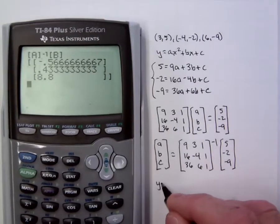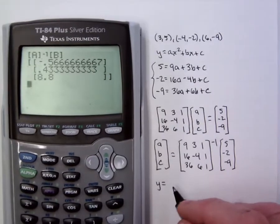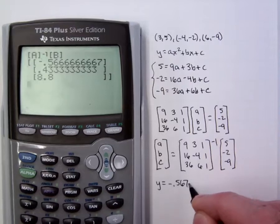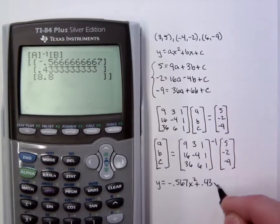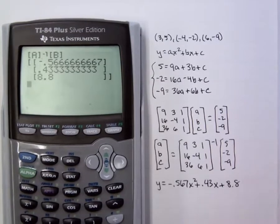And so our model should be Y equals -0.567 X squared plus 0.43 X plus 8.8.